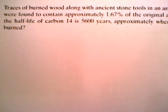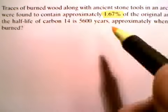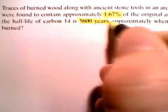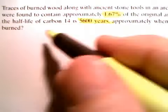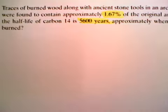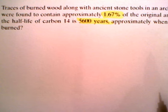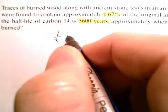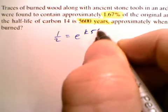Traces of burned wood along with ancient stone tools were found to contain 1.67% of the original amount of carbon-14. If the half-life of carbon-14 is 5600 years, approximately when was the tree cut and burned? This might seem like a daunting task, but it's really a matter of interpreting what is being asked. You've got this wood dug up, and they're trying to figure out how old it is. The half-life of carbon-14 is 5600 years, so the first thing you need to do is figure out the K.